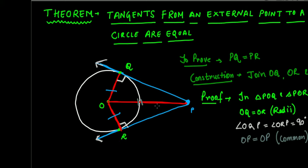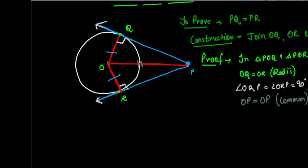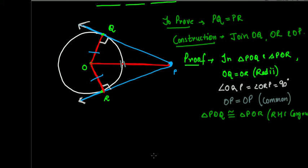Since the hypotenuses are equal and one side is equal, we can say that triangle POQ is congruent to triangle POR by RHS congruence, which we learned last year. Both triangles are congruent.